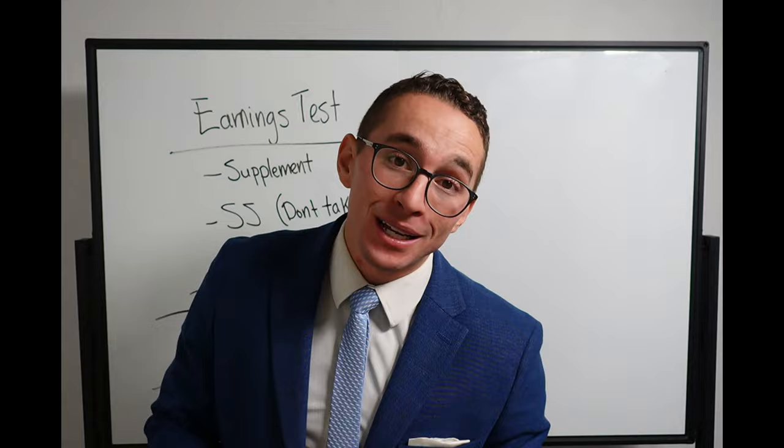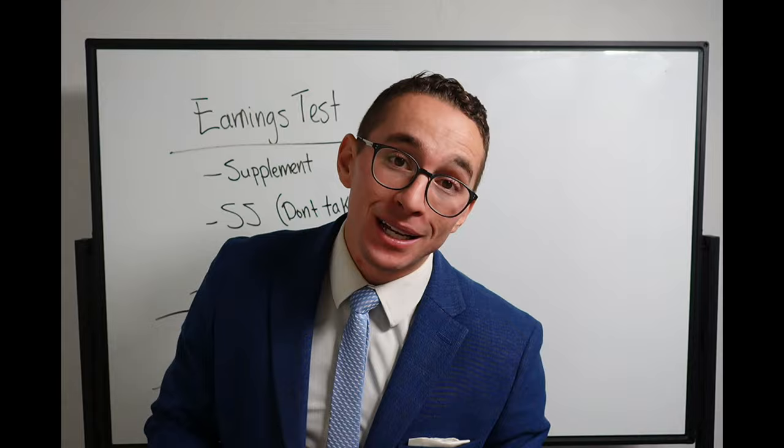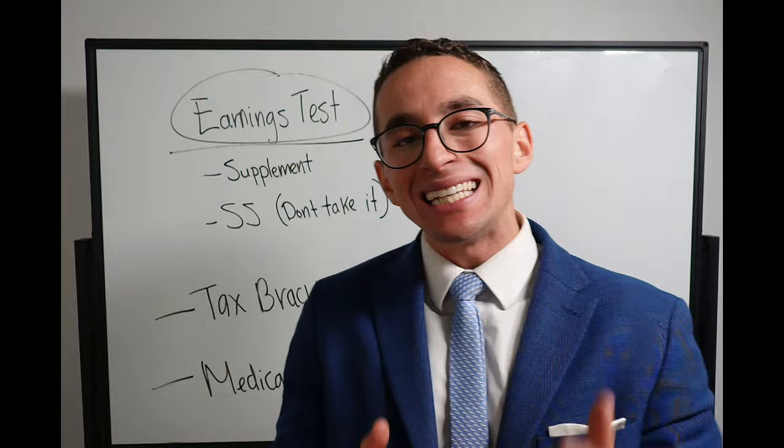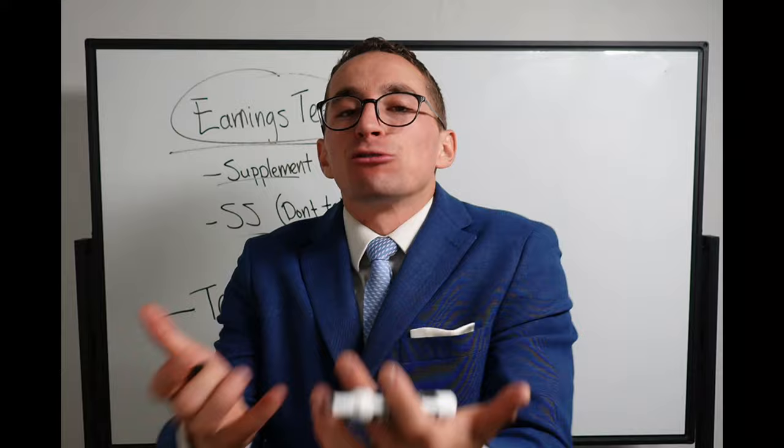Again, if you are planning to work or start a business, make money in retirement after you retire from the federal government, here are the things to look out for. Number one, earnings test. Earnings test. Some income, like your first supplement, like your social security, often get reduced if you make over certain amounts of money. And this is how it works.